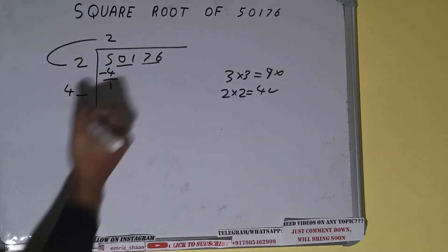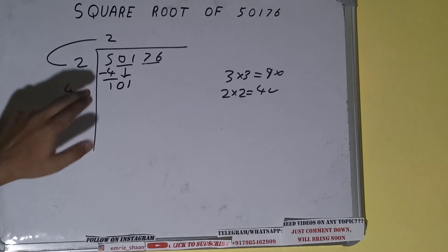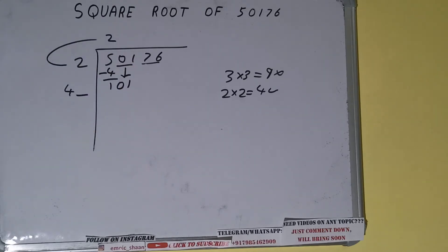Write it here and keep a digit extra. This number we need to make big, so bring the next pair down and it will become 101. Now whatever number we write here, we have to write here also.